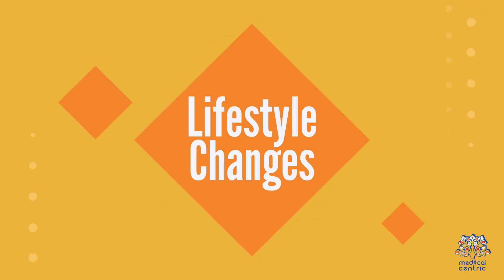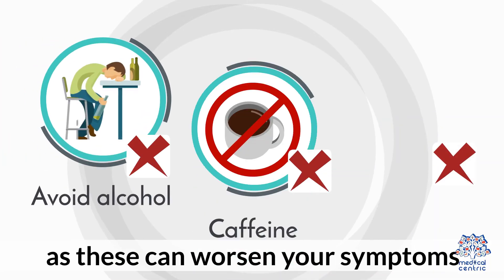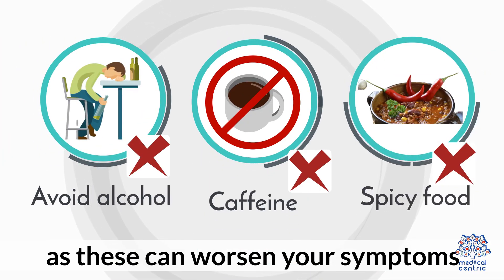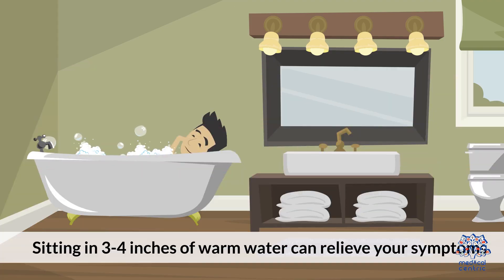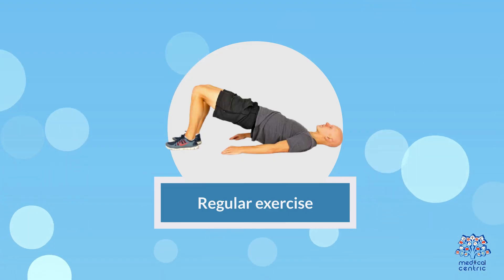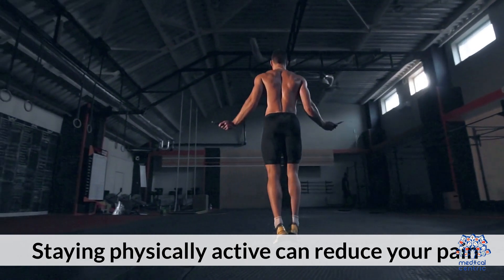Lifestyle changes include a balanced and healthy diet. Avoid alcohol, caffeine, and spicy food as these can worsen your symptoms. Hot water sitz bath — sitting in 3–4 inches of warm water can relieve your symptoms. Regular exercise and staying physically active can reduce your pain.